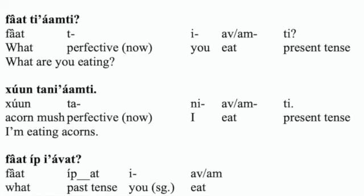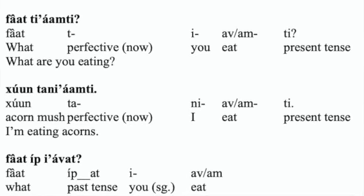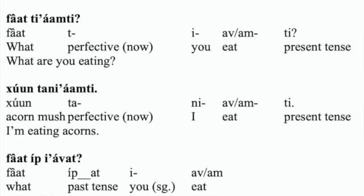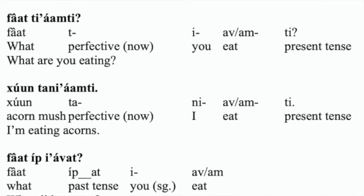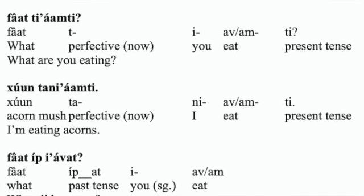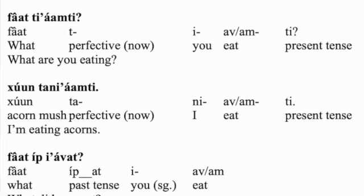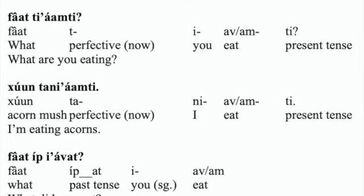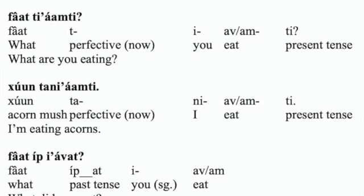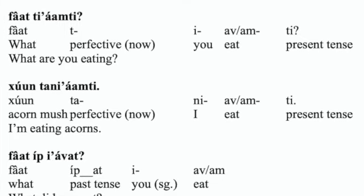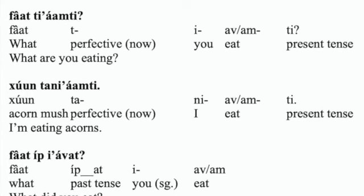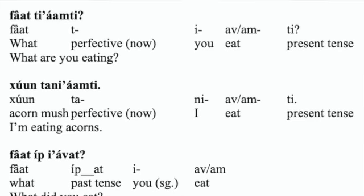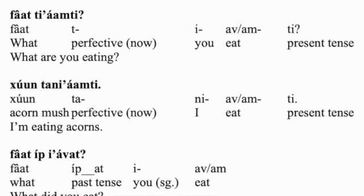Khun tani amti — khun ta, which is that perfective; ni, i; av, um — eat; ti — present tense. I'm eating acorns. Khun tani amti. So that perfective can be a t, or a ta, or sometimes t-a-h, and the ending can be hitti, wutti, itti — there are a lot of variations. I'm keeping it simple and specific to the ones that we're working on right now.